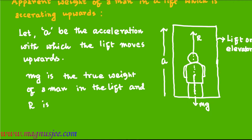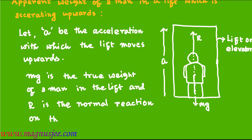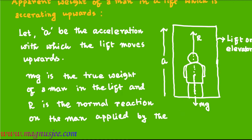R is the normal reaction on the man applied by the floor of the lift. Mg is the true weight or actual weight of a man in the lift, and R is the normal reaction on him applied by the floor of the lift.